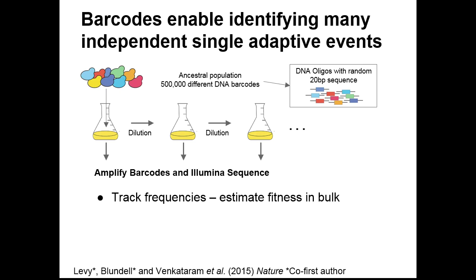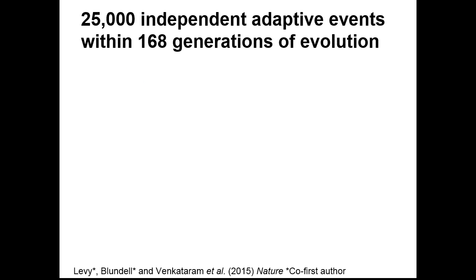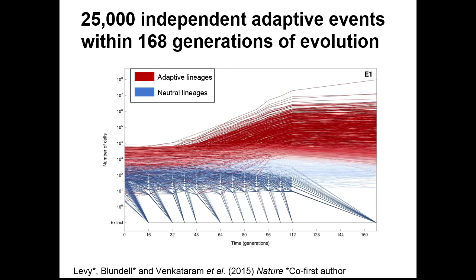This lets us estimate fitness in bulk — we can get 500,000 fitness estimates in a single experiment in a single assay, a level of power never achieved before. Adaptive events on unique barcodes must be independent simply because they occurred on independent barcodes. These experiments were conducted in the budding yeast Saccharomyces cerevisiae, published last year. We observed over 25,000 independent adaptive events within 200 generations of evolution.